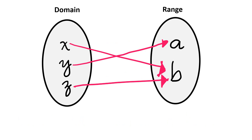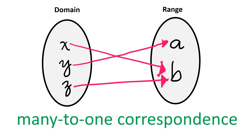This second mapping diagram also shows a function since each element in the domain is being paired once with the elements in the range. But both the elements x and z in the domain are paired with only one element in the range, which is B. Therefore, this is called many-to-one correspondence.